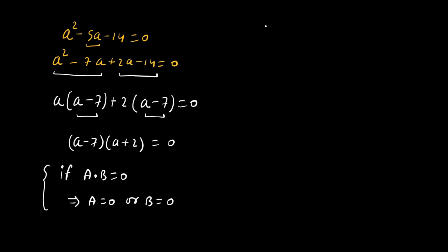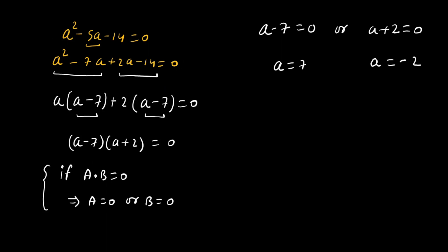By the zero product rule, a - 7 = 0 or a + 2 = 0, giving a = 7 or a = -2.